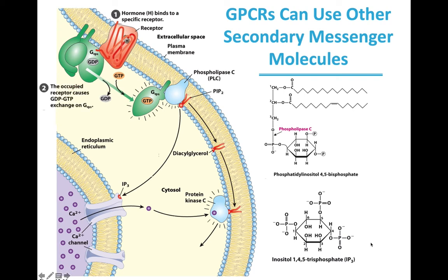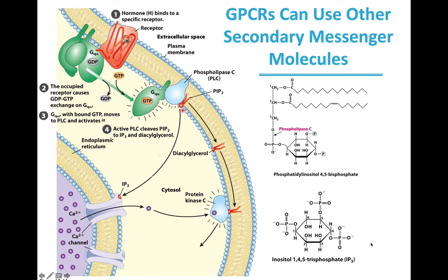Since the receptor is bound to a G-protein, hormone binding initiates the release of GDP and binding of GTP to the subunit named Gq-alpha, which is similar to the Gs-alpha subunit seen for the beta-adrenergic receptor. As a result of binding GTP, the Gq-alpha subunit of the G-protein moves to PLC, which is membrane-bound, and activates this lipase. Phospholipase C cleaves PIP2, producing diacylglycerol and inositol-1,4,5-triphosphate (IP3).